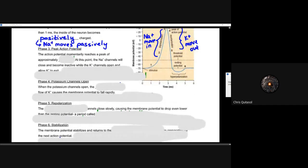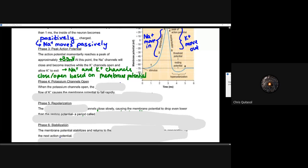Phase three: we reach something called the peak action potential. This action potential momentarily reaches a peak of approximately positive 30 millivolts. At this point, the sodium channels will close and become inactive. The potassium channels now open up and allow potassium to exit, because the inside of that cell is now more positive and it wants to reach that balance. The outside is more negative, so potassium can easily flow out of the cell, starting to decrease or repolarize that neuron.